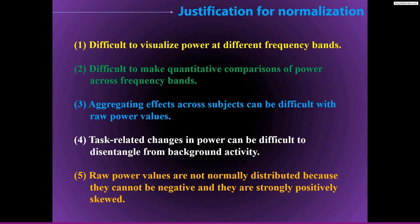And finally, point five is more of a statistical point. Raw power values are inherently non-normally distributed. They cannot be negative and they tend to be very strongly positively skewed. And so if you would like to perform parametric statistics like ANOVAs or regressions or factor analyses, then raw power values can cause a lot of headaches in your statistical procedures.